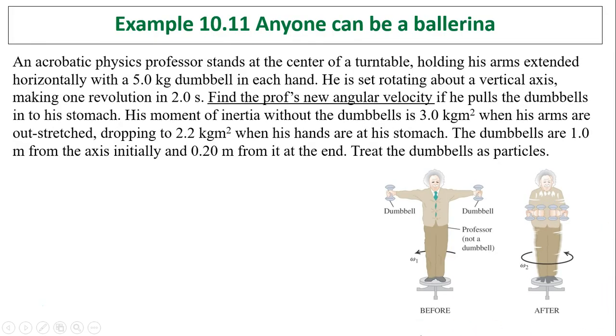Even when a system has several parts, the internal forces that the parts exert on each other cause changing angular momentum of the parts, but the total angular momentum doesn't change. So the total angular momentum of the system is still constant if the external torque on the system equals zero. Let's take a look at this example. Anyone can be a ballerina. An acrobatic physics professor stands at the center of a turntable, holding his arms extended horizontally with a 5 kilogram dumbbell in each hand. He's set rotating about a vertical axis, making one revolution in two seconds. Find the professor's new angular velocity if he pulls the dumbbells into his stomach. His moment of inertia without the dumbbells is 3 kilograms meter squared, while his arms are outstretched and drops to 2.2 kilograms meter squared when his hands are at his stomach. The dumbbells are 1 meter from the axis initially and 0.2 meters from it at the end. Treat the dumbbells as particles.